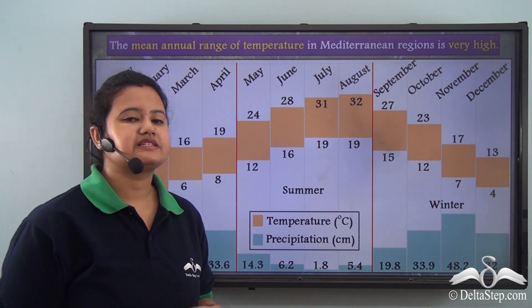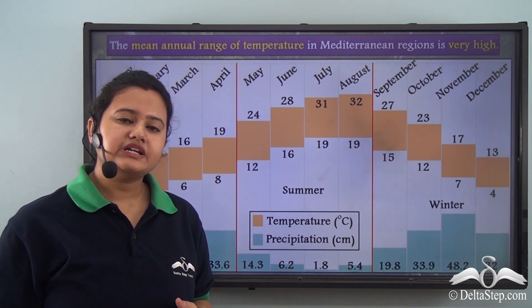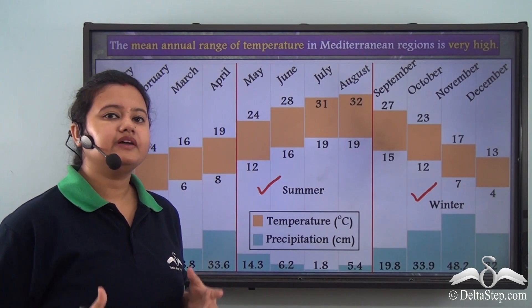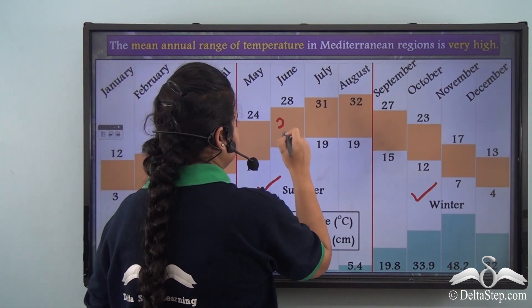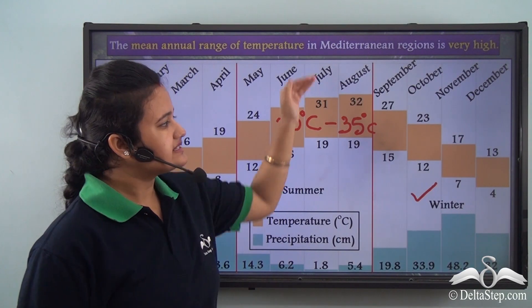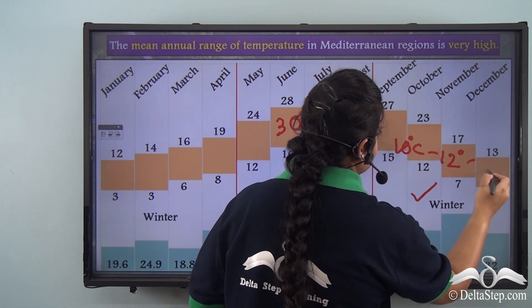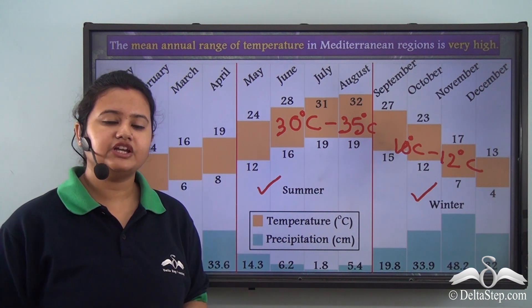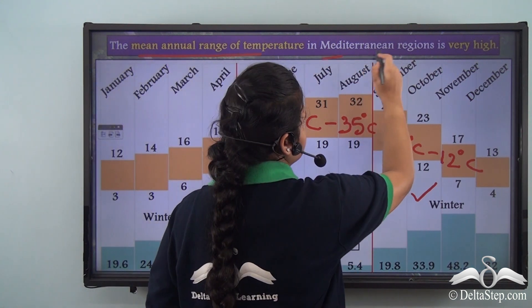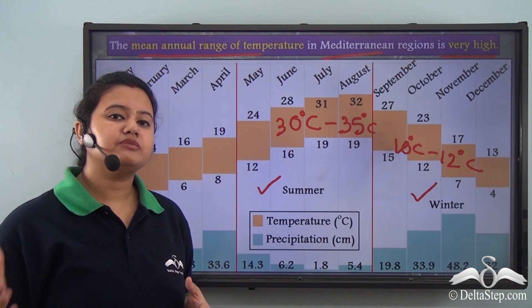This chart displays the temperature and precipitation pattern of Mediterranean regions of the world. Mediterranean regions have two distinct seasons — summer and winter. As we can see here, during summer the temperature is high and it ranges between 30 to 35 degree Celsius. Whereas during winter there is a significant drop in temperature and it ranges between 10 to 12 degree Celsius. So here we can find that there is wide variation in summer and winter temperatures. In fact, the mean annual range of temperature in the Mediterranean regions is very high.